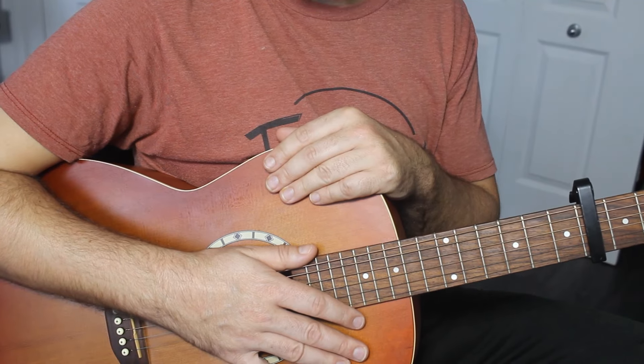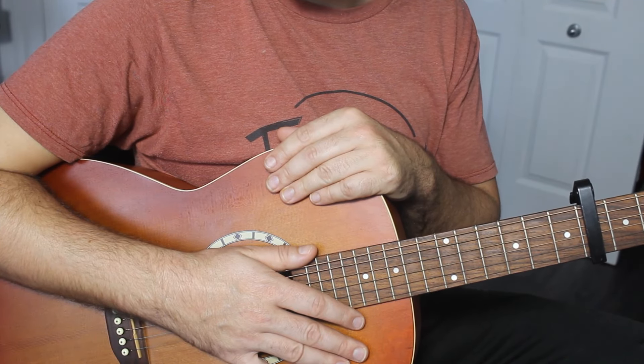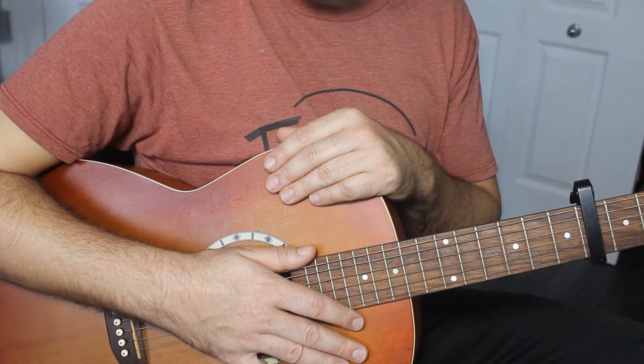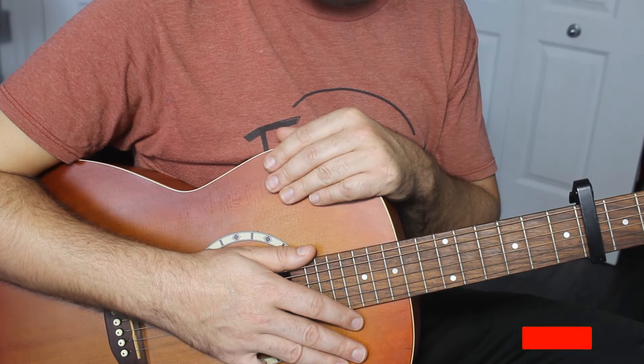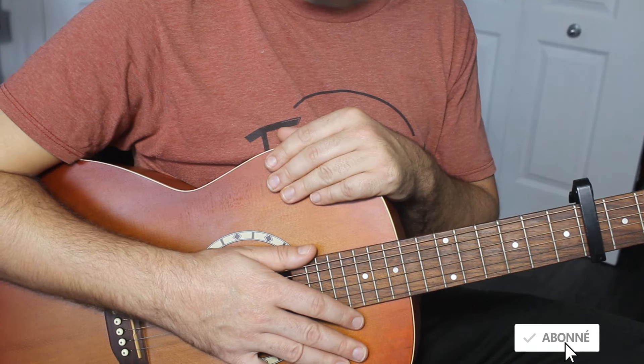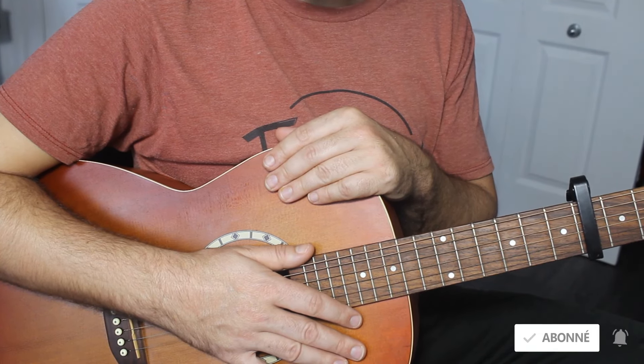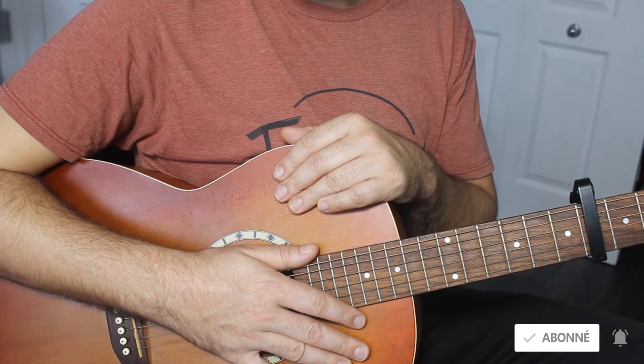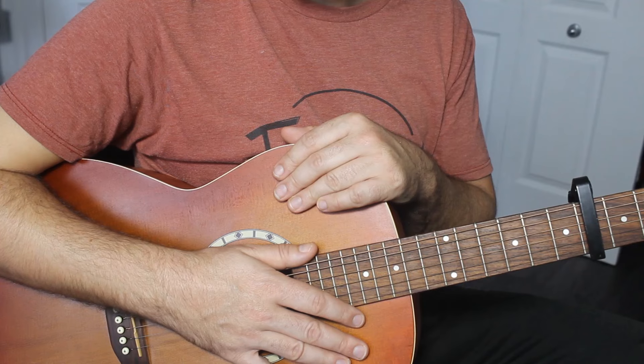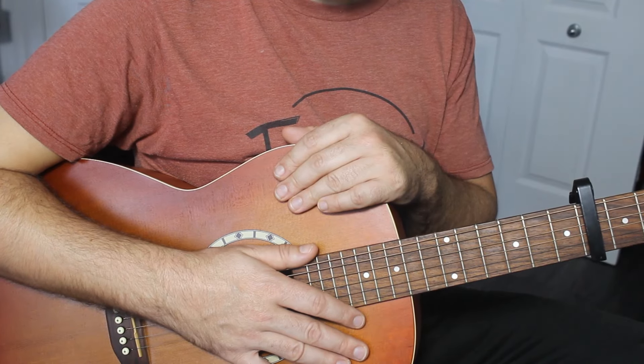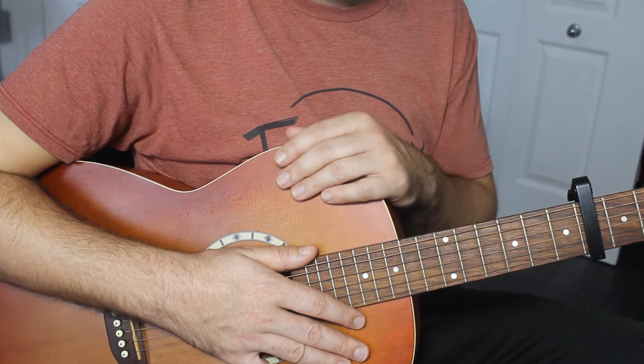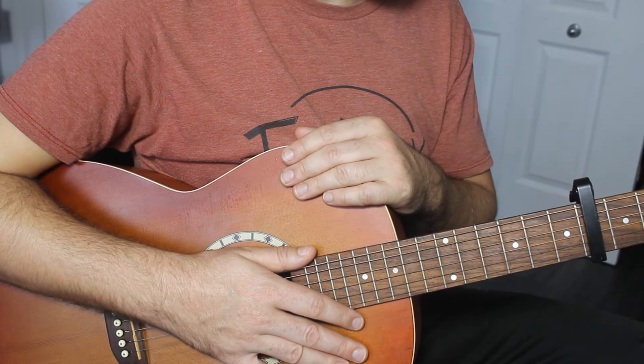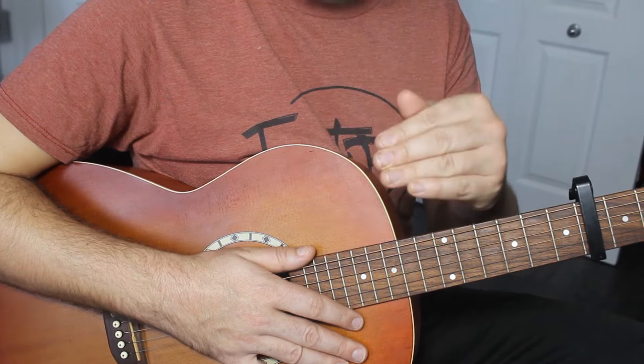Aujourd'hui, on va travailler le Travis Picking. C'est un picking de fingerpicking que vous pouvez faire, que j'utilise souvent. Et on va travailler ce riff-là par étapes. Même si vous n'avez jamais joué de fingerpicking, c'est une belle façon de commencer. Je vais y aller par étapes. Vous ne serez peut-être pas capable de jouer le riff aujourd'hui, mais vous allez voir que ça va vous faire pratiquer bien des choses.